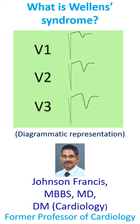The original description of Wellens syndrome dates back to 1982, in which they identified a subgroup of patients admitted with unstable angina who are at high risk of development of an extensive anterior myocardial infarction. These patients with critical stenosis high in the left anterior descending coronary artery had characteristic ST-T segment changes in the precordial leads on or shortly after admission.